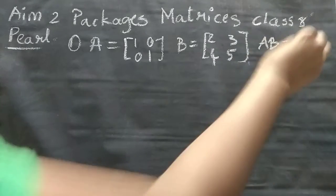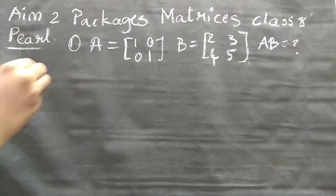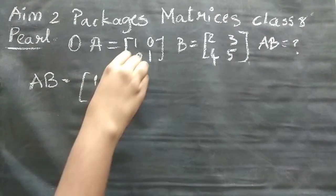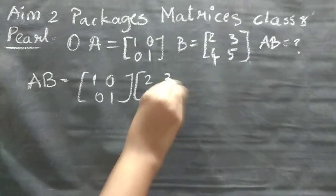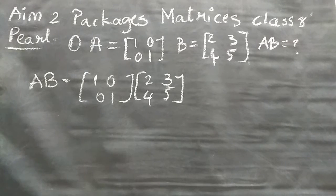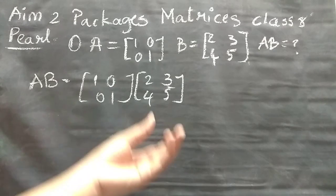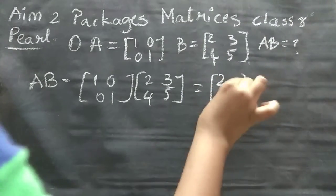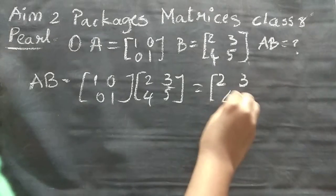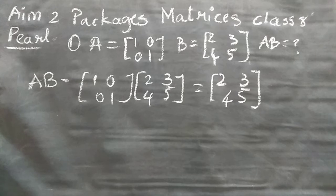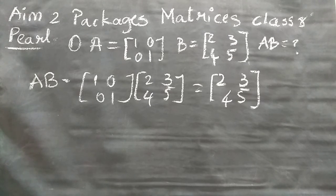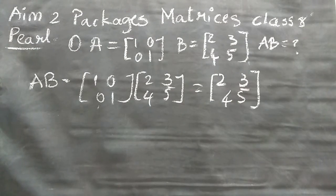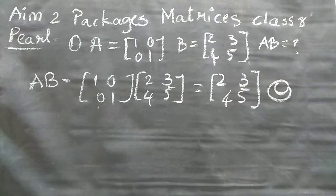AB means A into B. So how to find that? We will see now. So AB is equal to [1, 0, 0, 1] into [2, 3, 4, 5]. So that is equal to, when you multiply one matrix with a unit vector, it is going to be the same. So we know, right, I explained in the challenges part. When you multiply anything with a unit vector, the number will be the same. So this is the answer, option C.